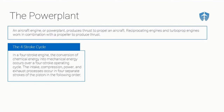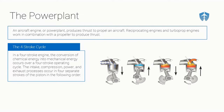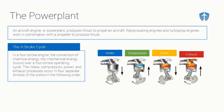In a four-stroke engine, the conversion of chemical energy into mechanical energy — taking that fuel and air mixture and turning it into pistons moving and crankshafts turning — usually occurs over a four-stroke cycle. You've got the intake stroke, the compression stroke, the power stroke, and the exhaust stroke.